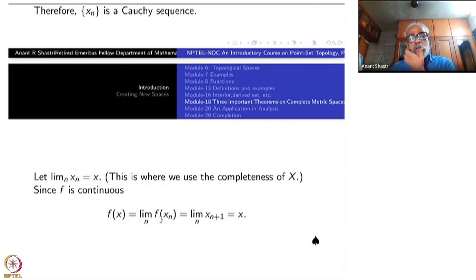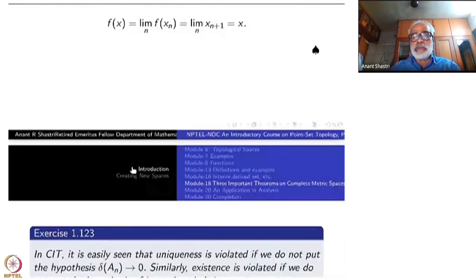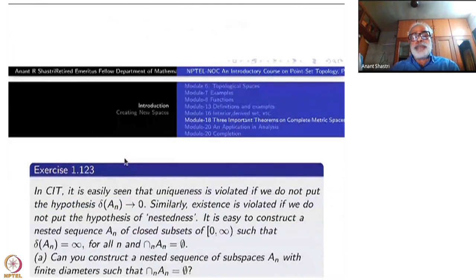But limit of x_{n+1} or x_{n+2} or whatever it is, as n tends to infinity is same limit which is x. So x is a fixed point of f. Uniqueness you have already proved. So the third theorem takes a little more time. Therefore, let us first consolidate these two theorems today. And we will do the third theorem next time.